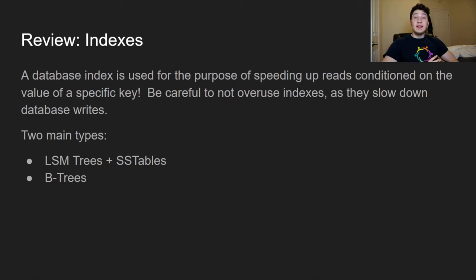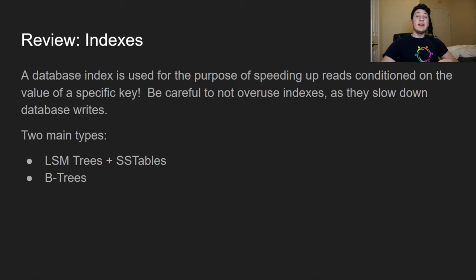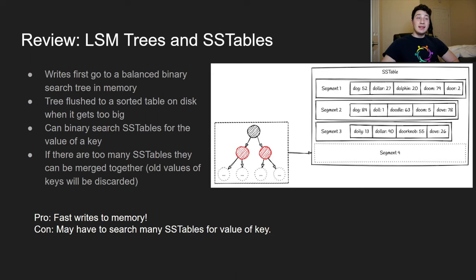A database index is super useful for speeding up reads on a database — it does slow down writes — but the general gist is that you are sorting in a specific order by key, and this makes it so that when you're searching for a specific key and its value you can do so much faster. In today's on-disk databases there are two predominantly popular types of database indices: the LSM tree and SS table combination, and the B-tree.